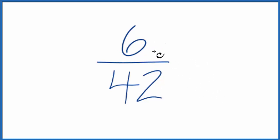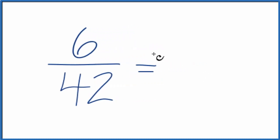So if you knew that 6 times 7 would give us 42, you could say 6 divided by 6, that's 1, 42 divided by 6, that's 7.